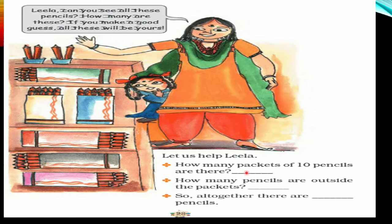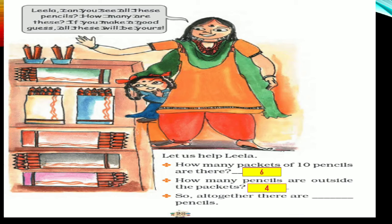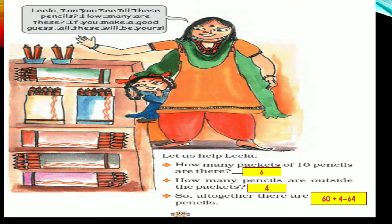How many packets of 10 pencils are there? Let's count. 1, 2, 3, 4, 5, 6. 6 packets of 10 pencils. And how many pencils are outside the packet? 4 pencils. So 6 packets make 60 pencils and 4 outside. Altogether there are 64, because 60 and 4 make 64.